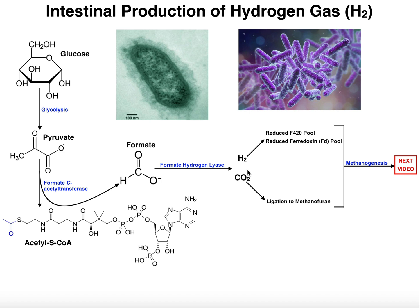Just a quick recap: in the last stage of hydrogen synthesis, formate is going to be broken down by formate hydrogen liase into hydrogen gas and carbon dioxide. The carbon dioxide, along with other sources of it — this is not the only source — are going to be ligated to a coenzyme known as methanofuran. That's going to be the first step of methanogenesis.